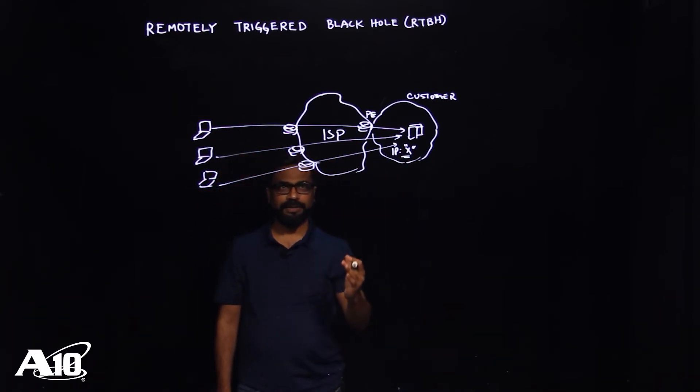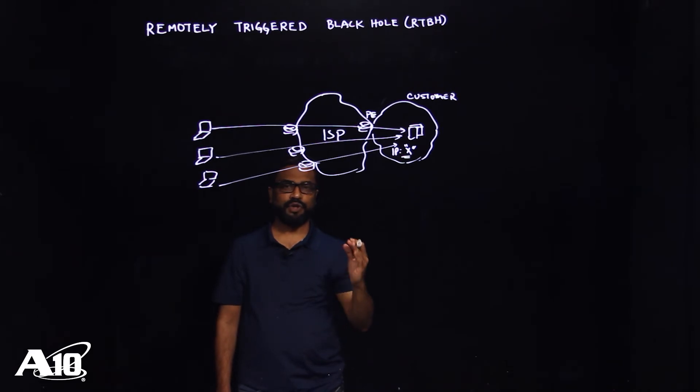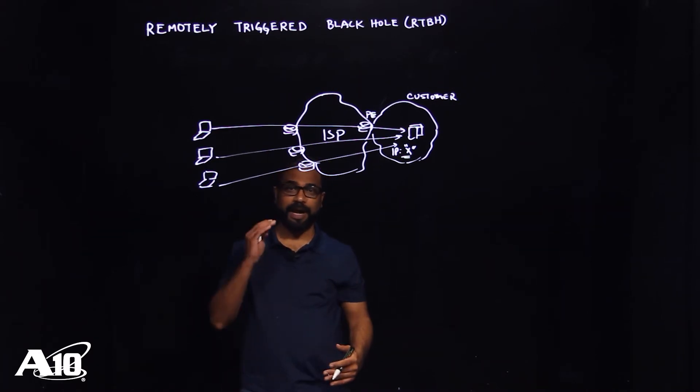Another side effect of that is that it's not just an attempt to take down the server, but it's also going to impact the ISP core network. And perhaps it could cause degradation for another customer service as well. So we need to block the traffic at the edge of the network.